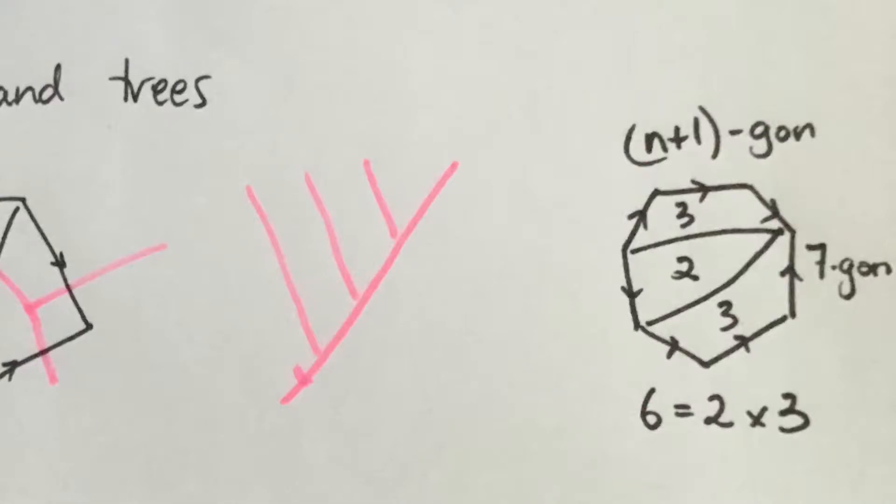In other words here is the way we factorize the number 6. 6 equals 2 times 3 in terms of the primes 2 and 3. We draw that inside a polygon with 7 sides. Now try for yourself and check that this works for any number, any positive integer number.